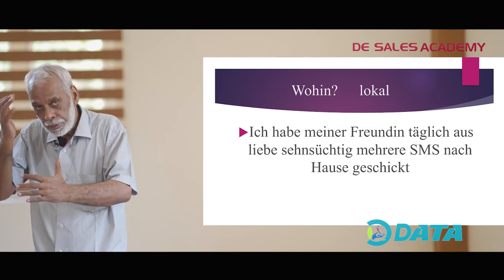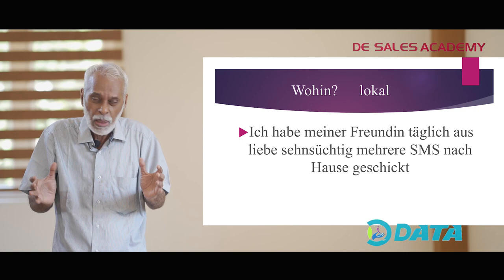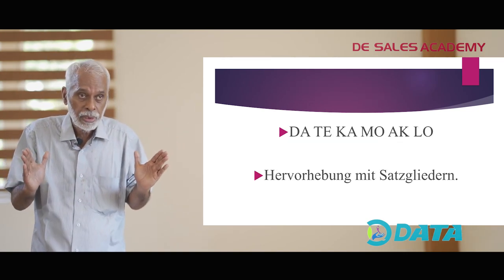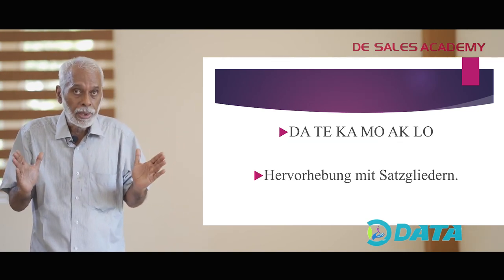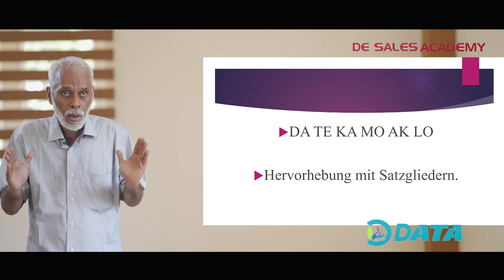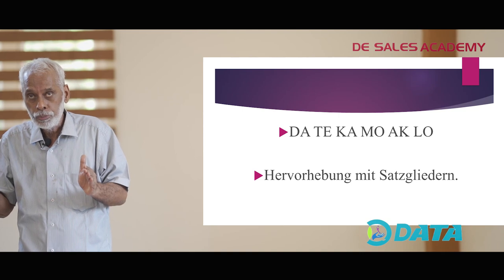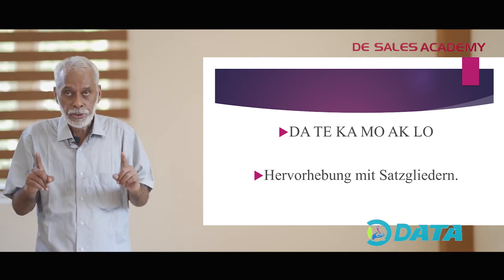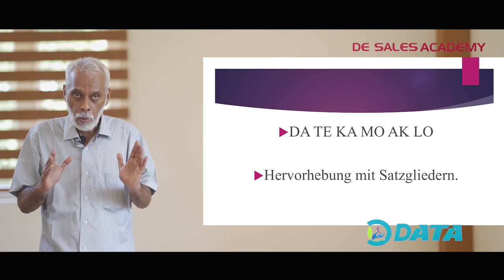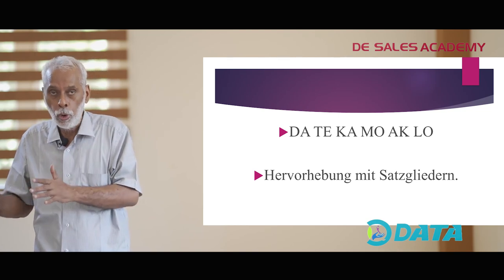Das ist die Ordnung der verschiedenen Satzglieder in einem deutschen Satz. That may be a little difficult to remember, but there is a short way — we learn this by heart: DA-TE-KA-MO-AK-LO: Dativ, Temporal, Kausal, Modal, Akkusativ, und Lokal.